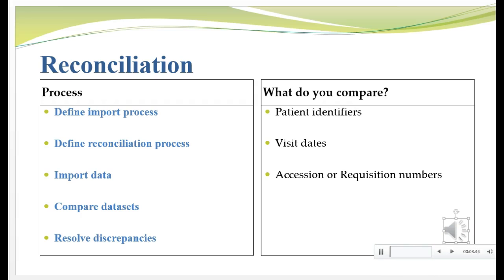How do you do a reconciliation? First you have to define the import process — you have to agree with the central lab what the data they're sending you will look like, how often you'll get it, what the data fields will look like, and what they'll be named. You also have to define the reconciliation process up front; you can't wait and write it down at the end after you've done it. Once your import and reconciliation processes are documented, you import the data, compare the two data sets, look for differences or discrepancies, and then resolve those discrepancies by fixing your database or the central lab's data.